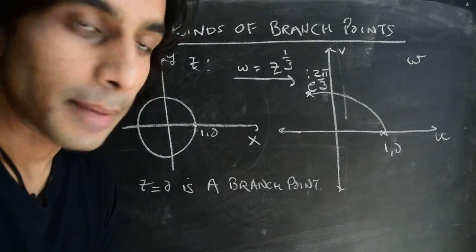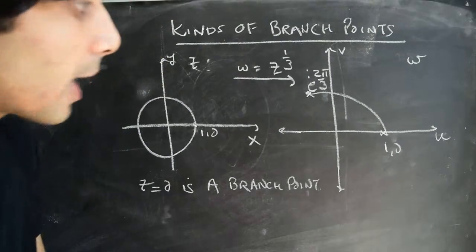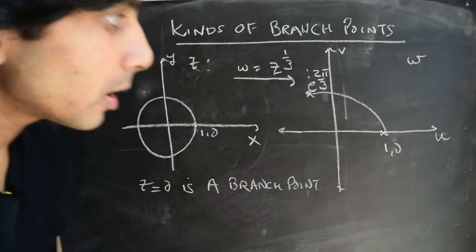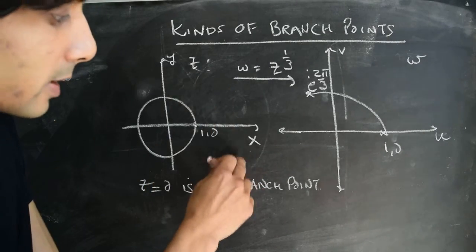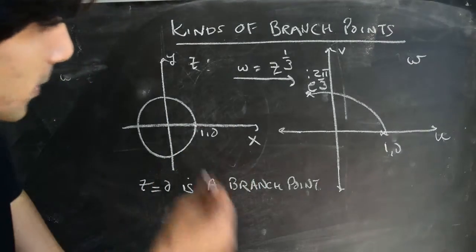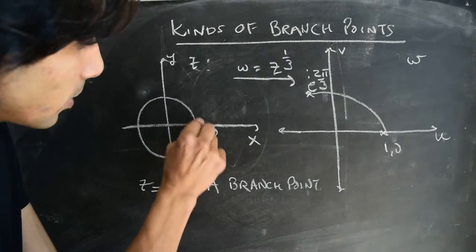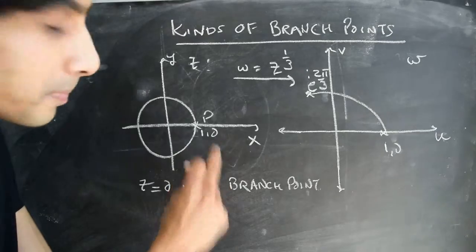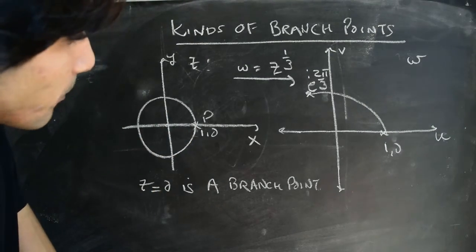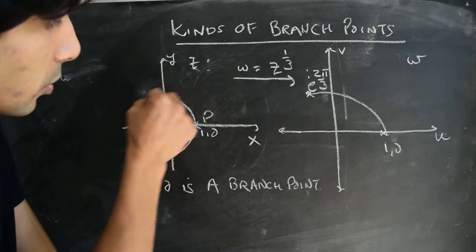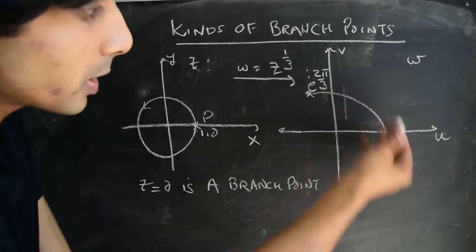We talked about the specific example of the mapping w equals z to the power of one third. As a reminder, this is the z-plane with real axis x and imaginary axis y. We make a unit circle in the z-plane, start at the point p which is (1,0), and this unit circle encloses the origin. Then as you make one revolution around the circle, as you walk along the circle once, we look at the image path.